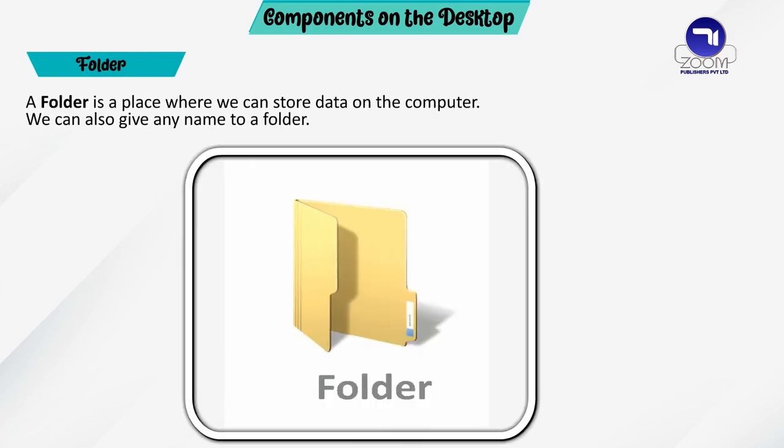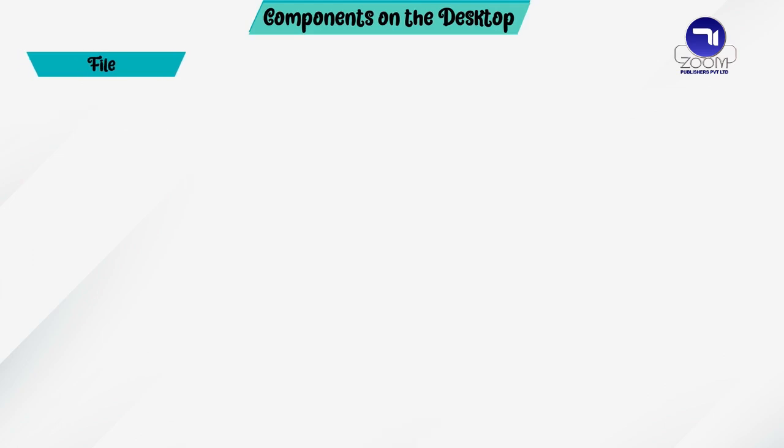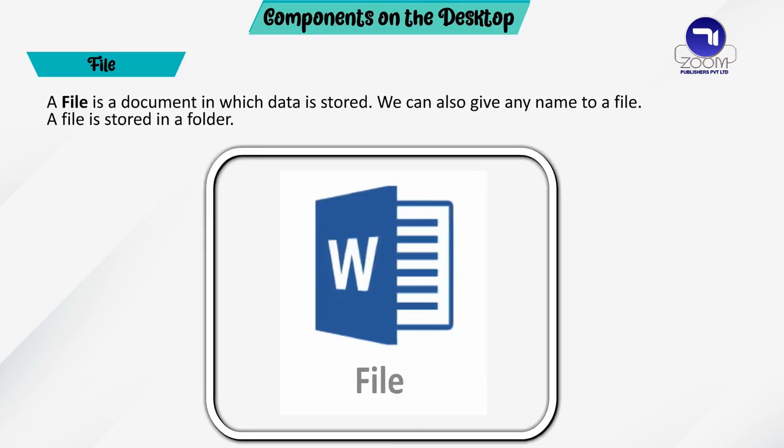A folder is a place where we can store data on the computer. We can also give any name to a folder. A file is a document in which data is stored, and we can give any name to a file. A file is stored in a folder.